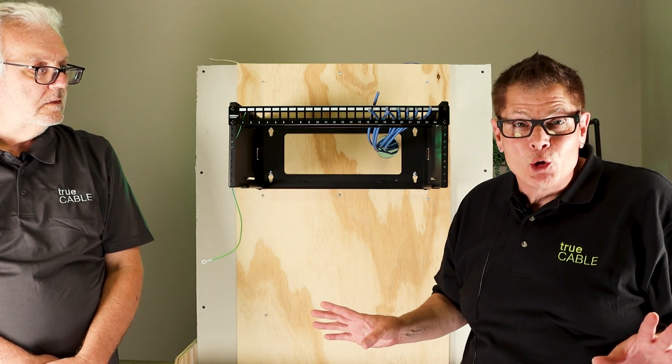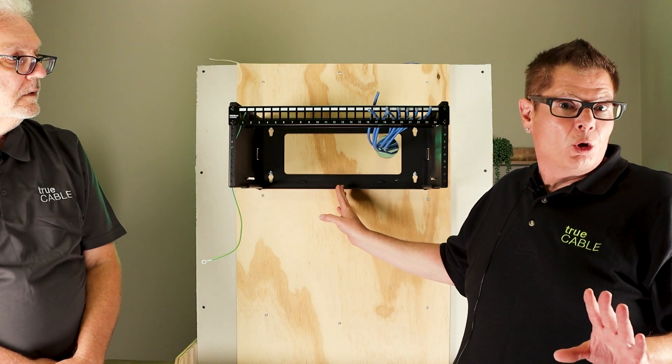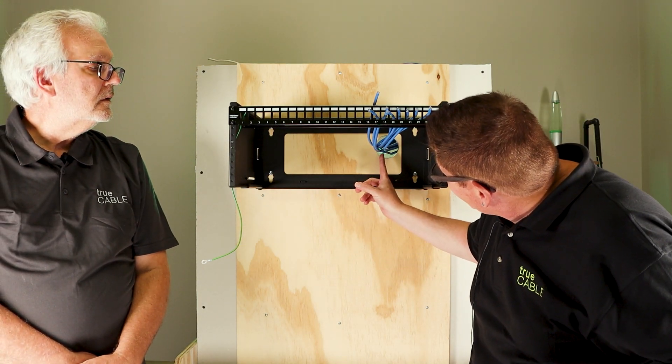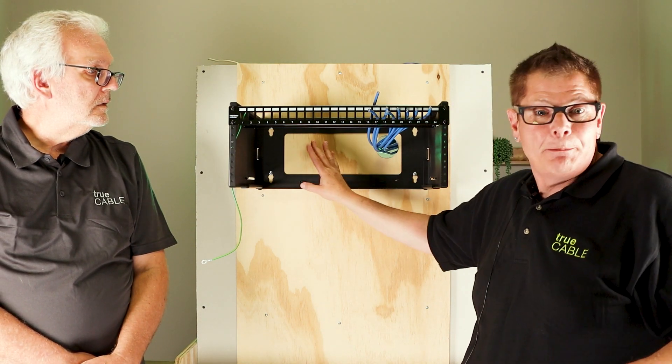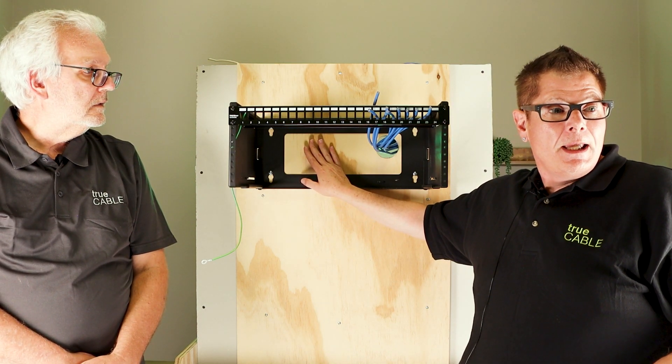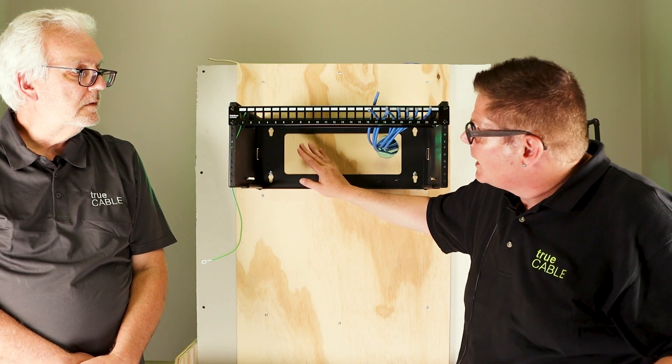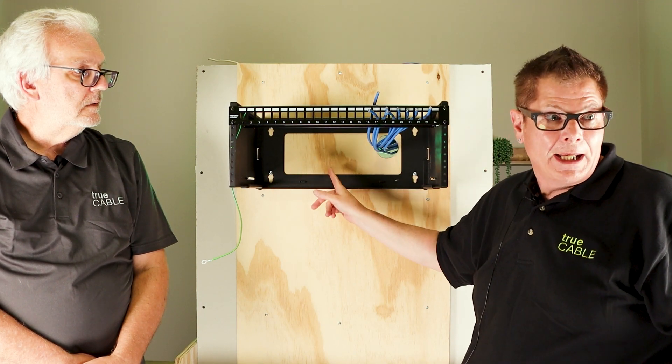One thing that some keen-eyed YouTubers are going to notice out there is that we did not, in fact, make use of a service loop here. This was a demonstration only. Normally we would have a cable coming through here and it would be then turned into a circle eight pattern right about here. And that would be a minimum of, in this case for residential, three feet of slack turned into a circle eight.